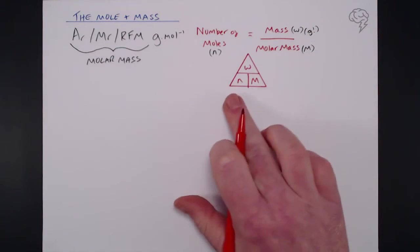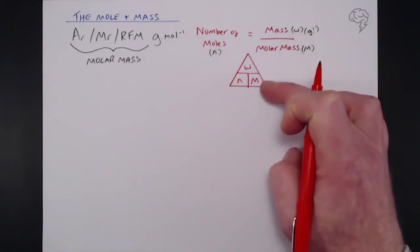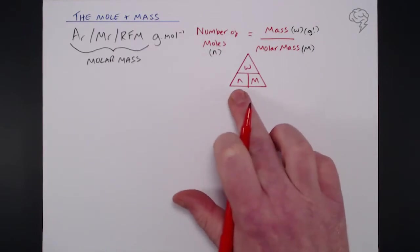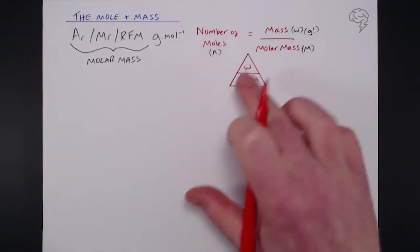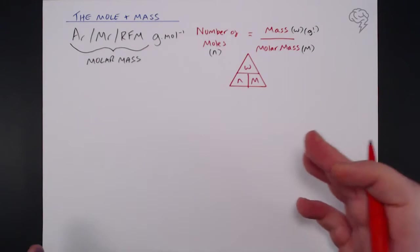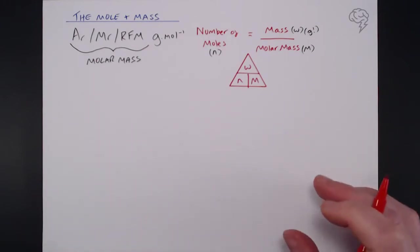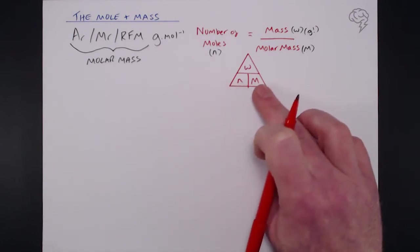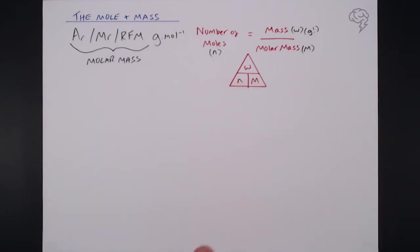So if you want number of moles that would be mass over molar mass. If you actually wanted the mass here then we can use number of moles times molar mass. Of course if you had an unknown substance and you wanted to find the molar mass of a substance then you can use mass over number of moles to find this missing molar mass here.